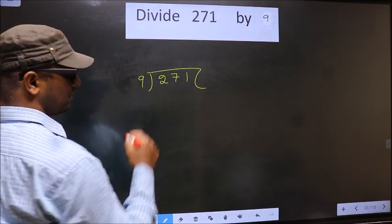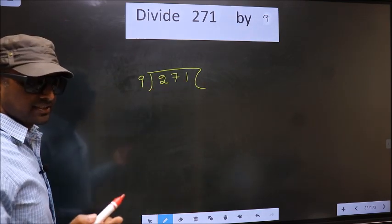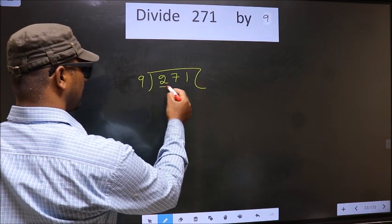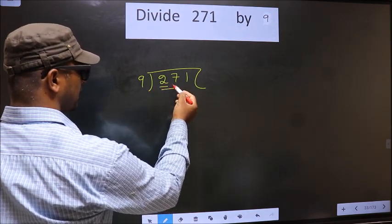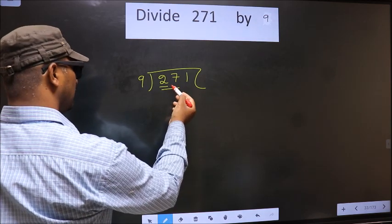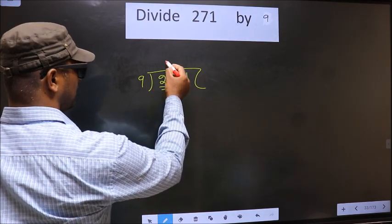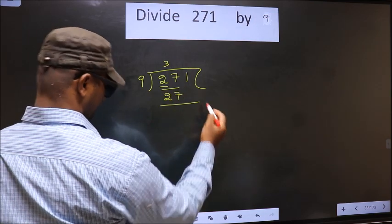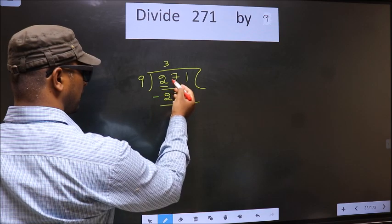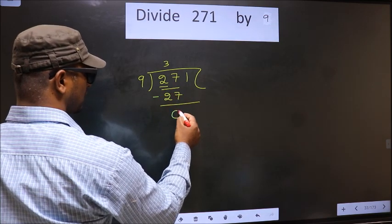9 here, okay. Next, now here we have 2. 2 is smaller than 9, so we take two numbers, that is 27. When do we get 27 in 9 table? 9 threes 27. Now you subtract 27 minus 27 is 0.